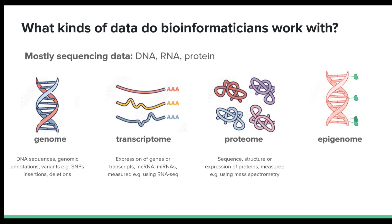Proteomic data might include data regarding the sequence, structure, or expression levels of proteins, which can be obtained using techniques such as mass spectrometry. Epigenomic data can include information about DNA methylation, histone modifications, or chromatin accessibility.